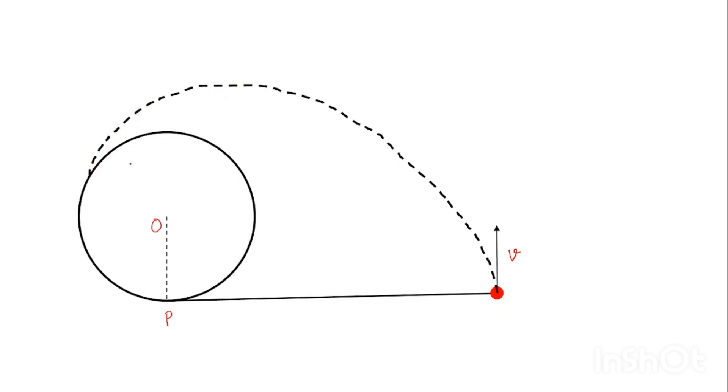So, what we have to see that, let us say, at some point, the thread is like this and the ball is like this. At this point, the tangency point has reached from P to, let us say, M. This is the point of tangency.